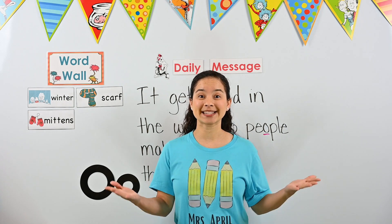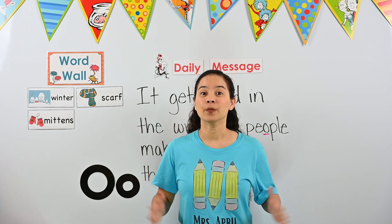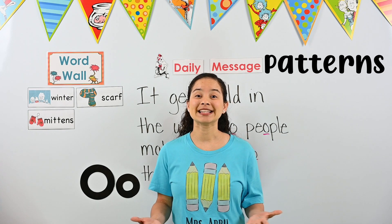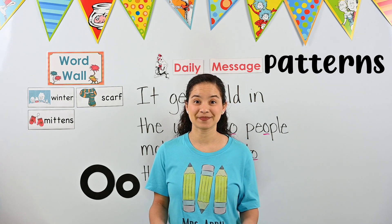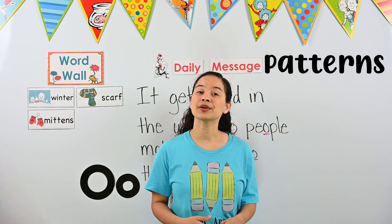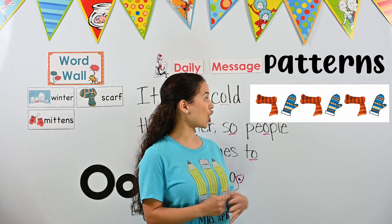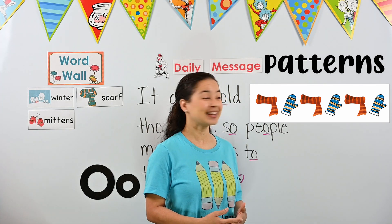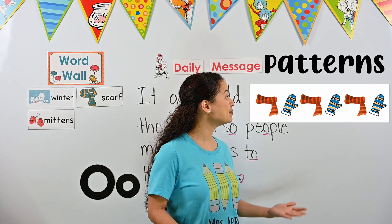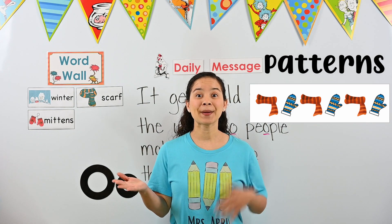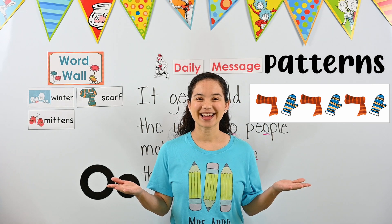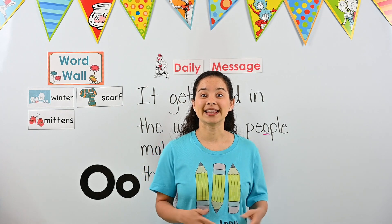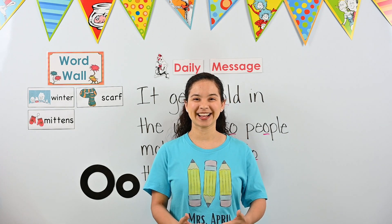Today we are going to do an activity with different types of winter clothing — we are going to make patterns. A pattern is something that repeats over and over again. Let me show you a pattern: I see a scarf and a mitten. What do you see after the mitten? Another scarf and then a mitten, and another scarf and a mitten. Our pattern is scarf, mitten, scarf, mitten. Today we're going to look at patterns, you're going to tell me the pattern, and then we'll even finish patterns. Are you ready? Let's look at our next pattern.